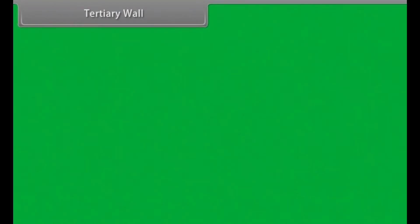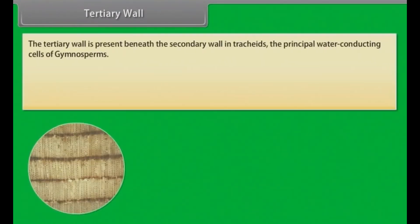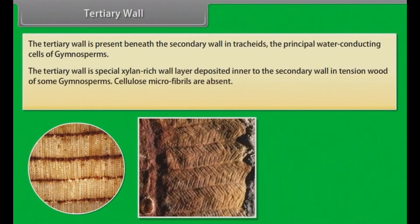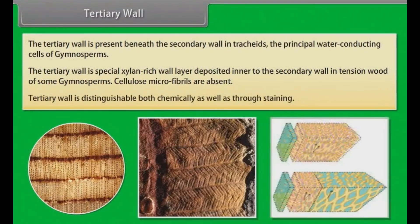Tertiary wall. The tertiary wall is present beneath the secondary wall in tracheids, the principal water-conducting cells of gymnosperms. The tertiary wall is a special xylem-rich wall layer deposited inner to the secondary wall. In tension wood of some gymnosperms, cellulose microfibrils are absent. The tertiary wall is distinguishable both chemically as well as through staining.